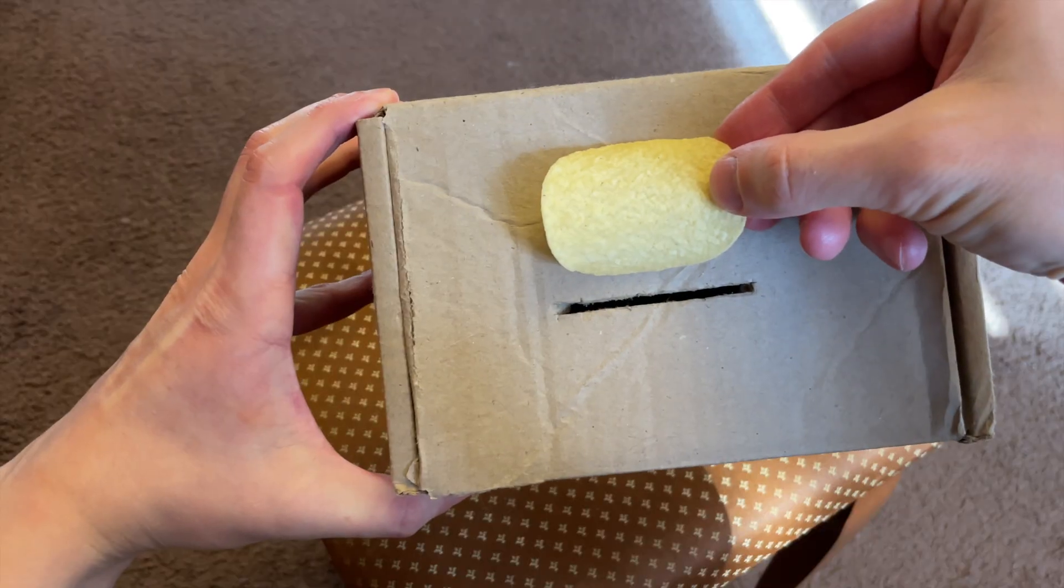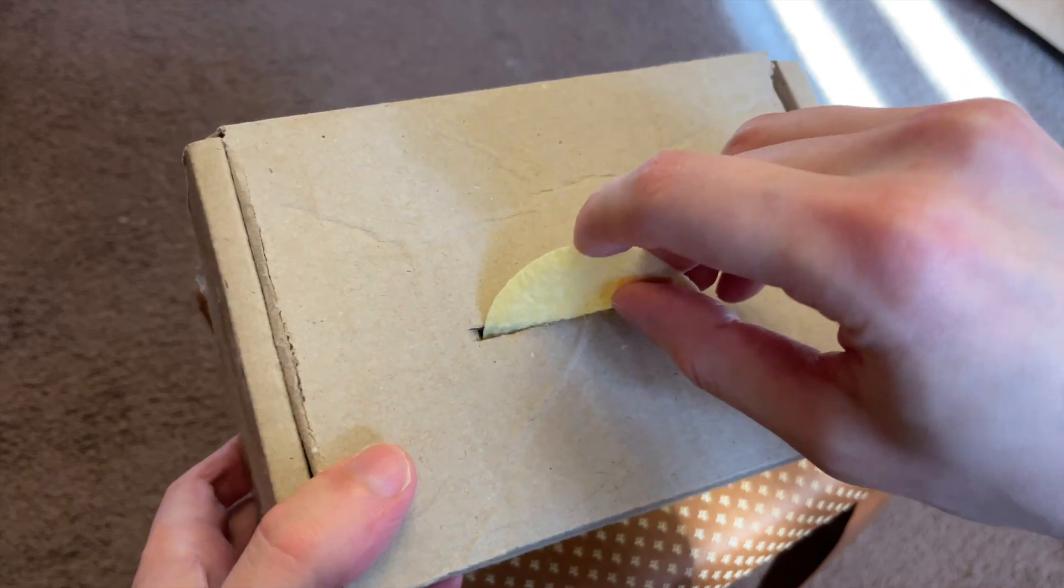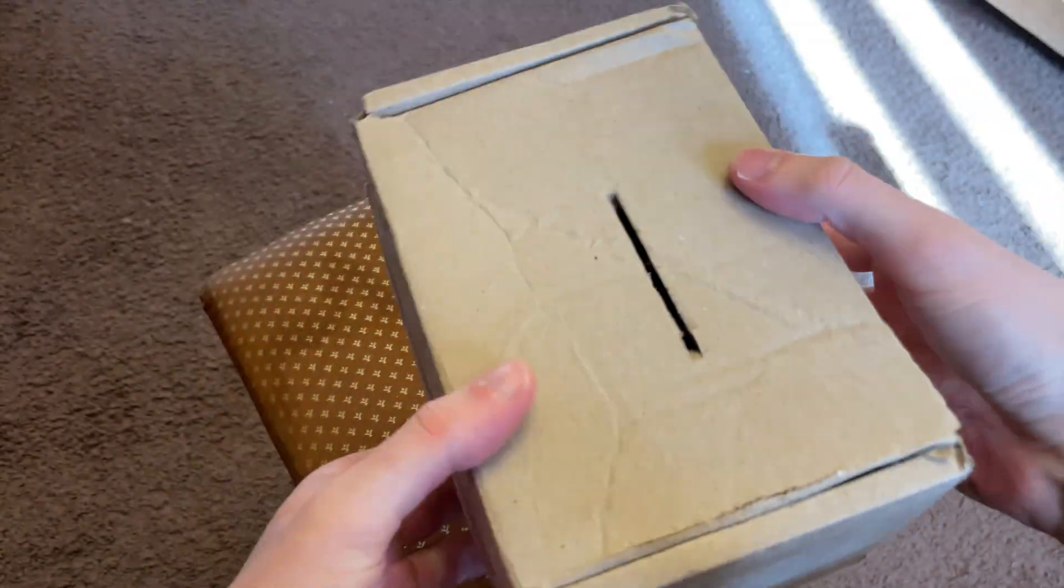If you take a Pringle and make a slit as wide as the chip, it is possible to fit it through without breaking. Why?